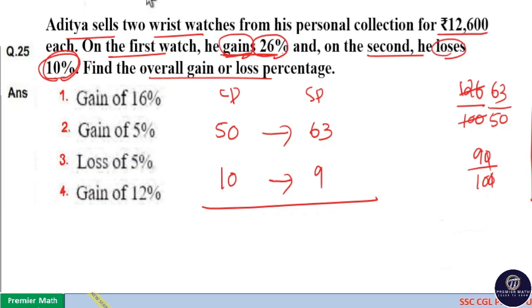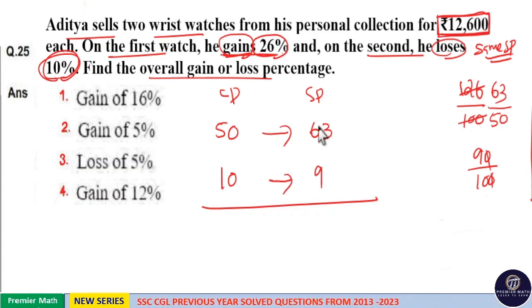But here, question clearly says that selling price is same. This is same SP question. That is, here, selling price for each of these watches is 12,600. Now, we have to equalize this selling price. Here, one selling price is 63 and one is 9. So, we have to equalize it because question says it.